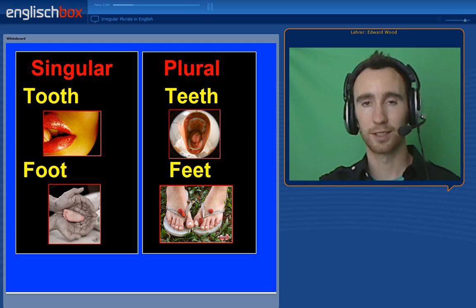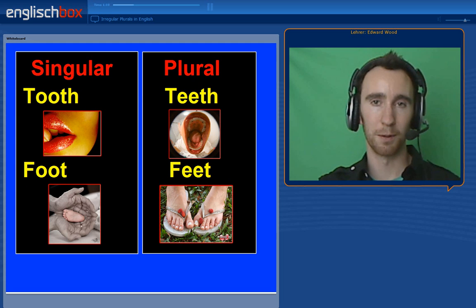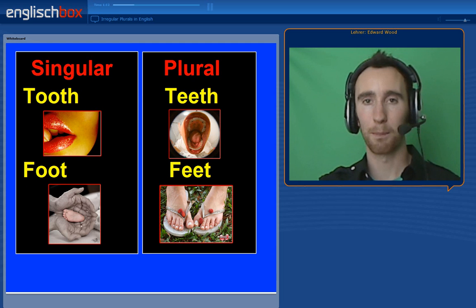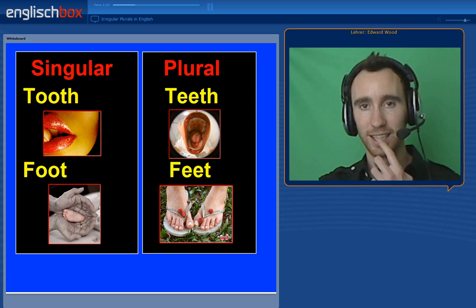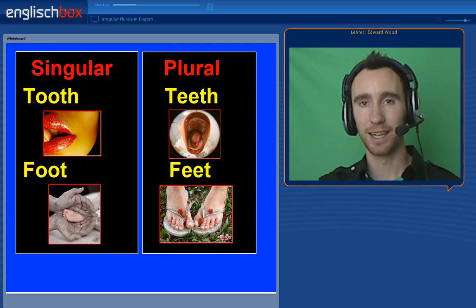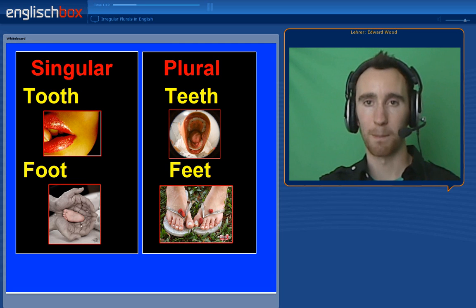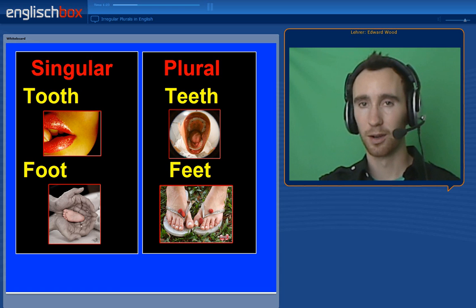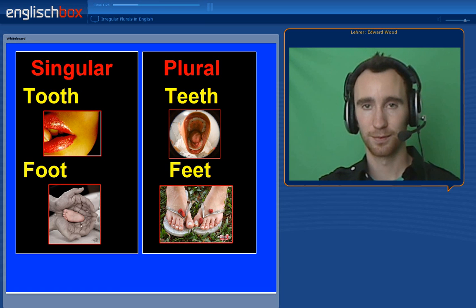For some parts of the body, we have irregular plurals. We say one tooth and we say many teeth, or a mouth full of teeth. We also say one foot and two feet.